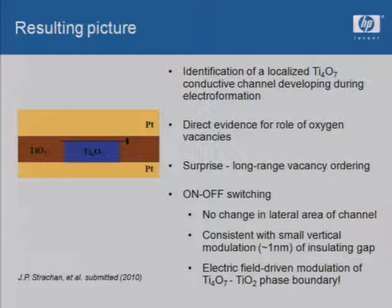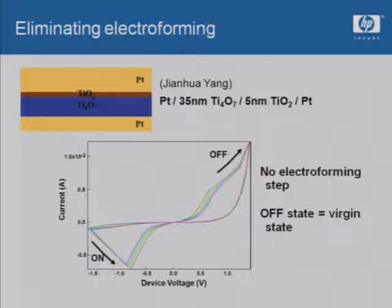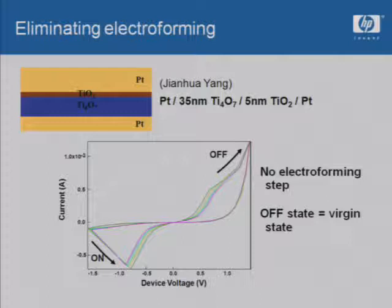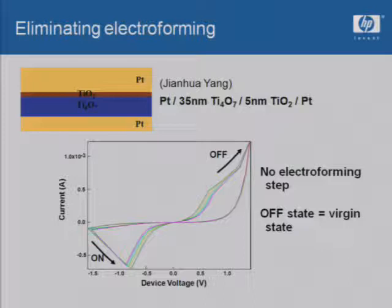My colleague Jin-Hua Yang used these results to make better devices. If electroforming only creates a large conductive channel, we can eliminate electroforming by growing devices deliberately that way from the beginning. Jin-Hua used a Ti4O7 target to deposit about 35 nanometers of suboxide layer, then grew a very thin TiO2 stoichiometric layer on top. The resulting devices show very nice switching with no electroforming step required, and the off state is identical to the virgin state of the device.